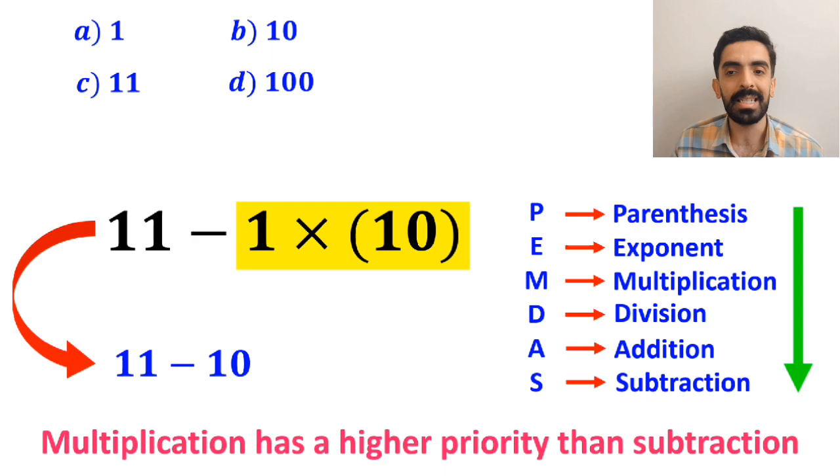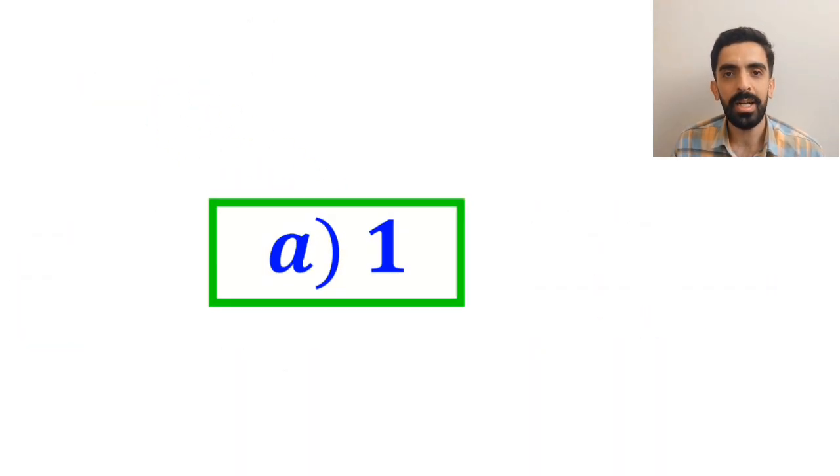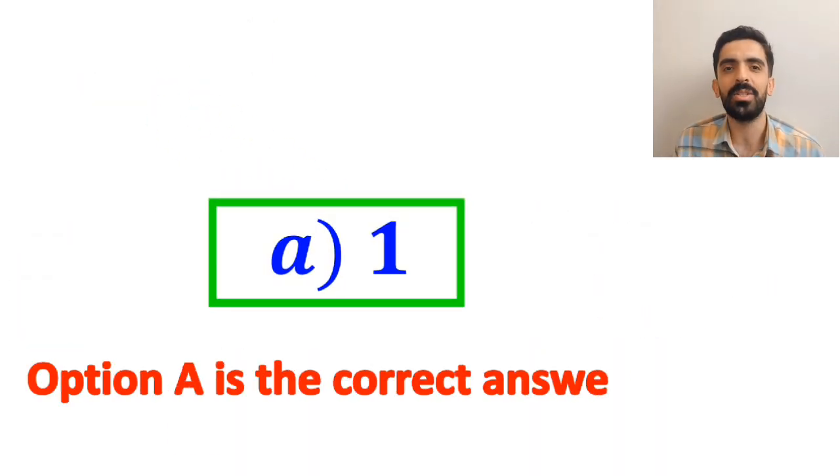So we rewrite this expression as 11 - 10, which finally gives us the answer 1. Therefore, option A is the correct answer to this question.